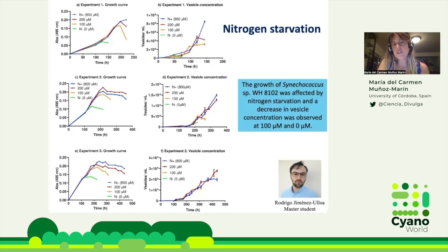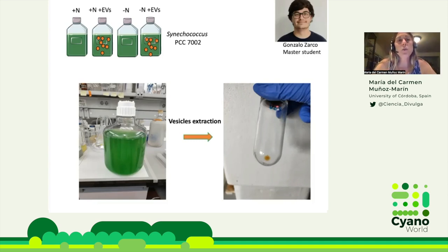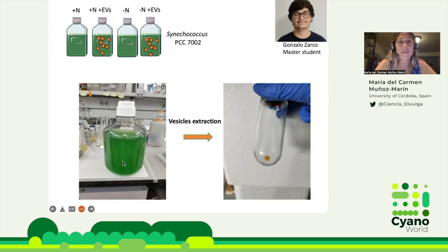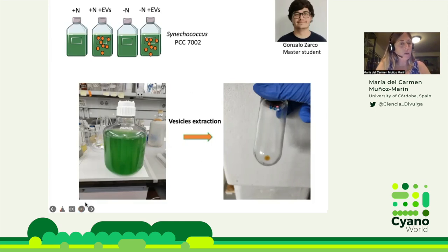To continue exploring nitrogen starvation, master's student Gonzalo set up an experiment with four cultures: two under normal nutrients (one with extracellular vesicles added, one without) and two under nitrogen starvation (one with EVs added, one without). The extracellular vesicles came from Synechococcus 7002 grown up to 20 liters. He completed three experiments adding the same amount of vesicles, measured by Nanosight. These are preliminary results from those three experiments.